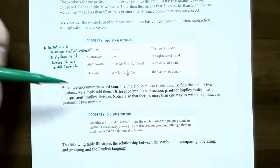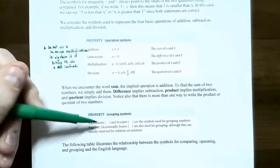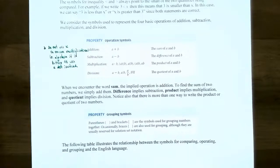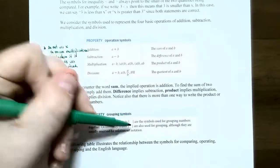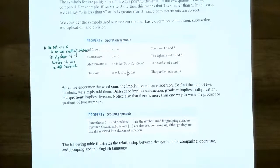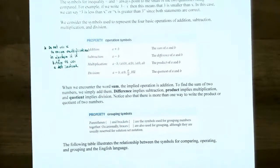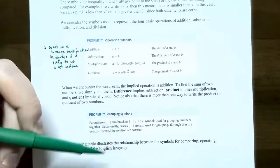We also have grouping symbols in mathematics. Parentheses and square brackets are the most common — they group real numbers and operations together. Very rarely you might see curly brackets or braces, which also group operations and real numbers together. Braces are also used when talking about set notation, which we'll cover in the next video.